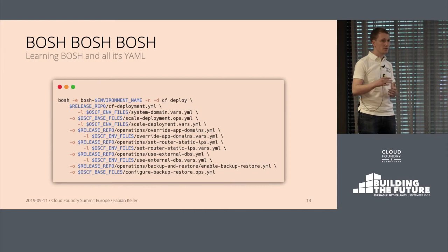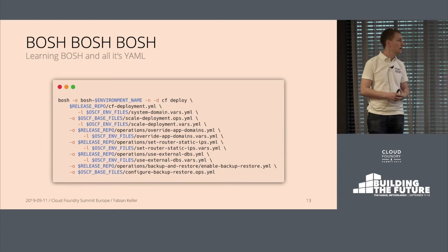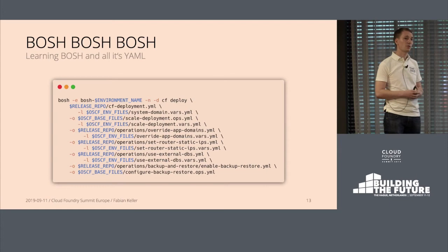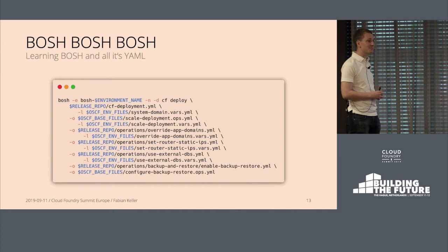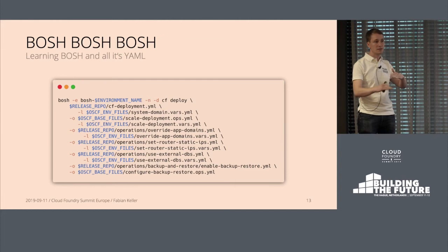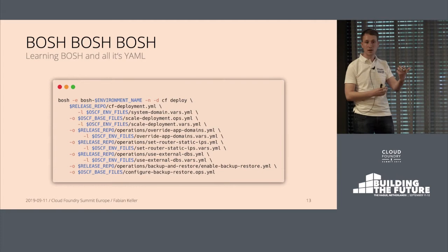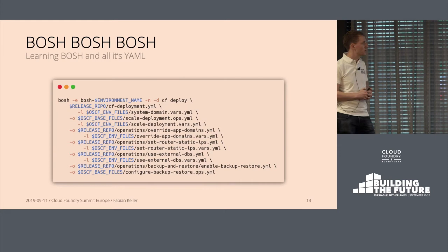We used the cf-deployment base YAML and all the operations files — upstream ops files of course. Deploying multiple environments, we had environment-specific operations files that only applied to a single environment and some environment-agnostic ones, and we came up with a way of putting them in different folders to reuse them across environments. The operations file would have something like changing an IP address, and the vars file would set the actual IP for that specific environment. This structure worked out pretty well.